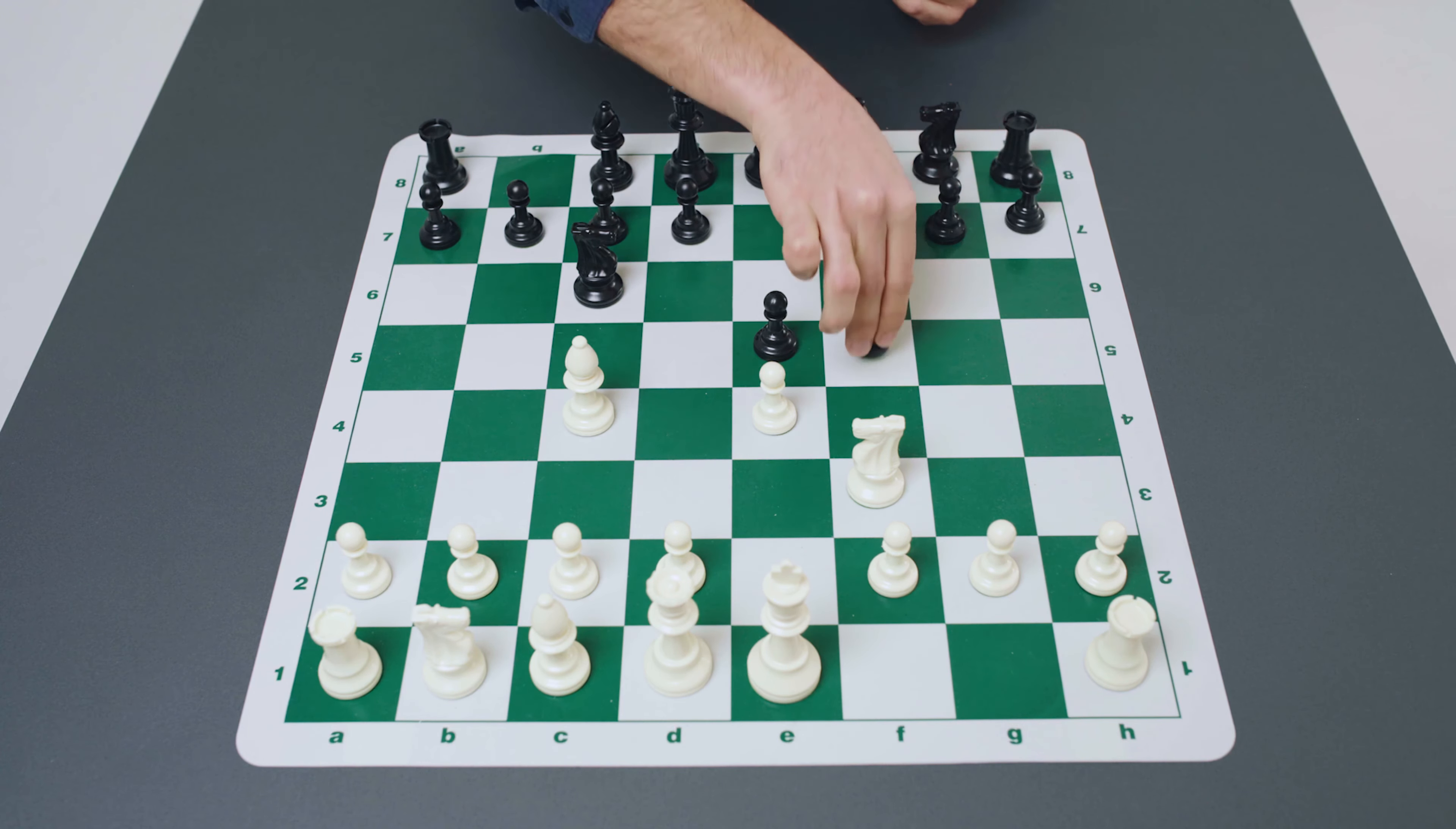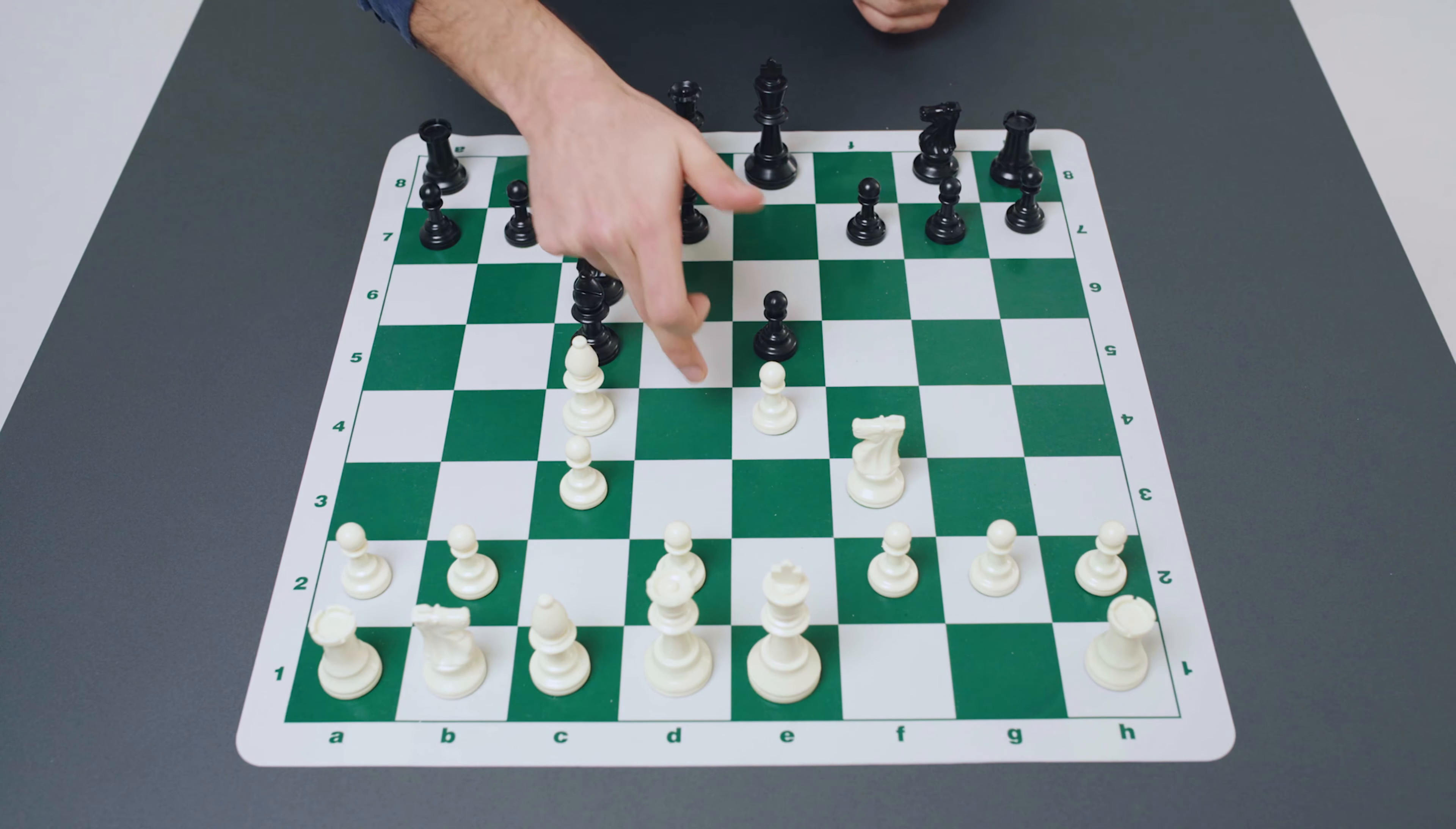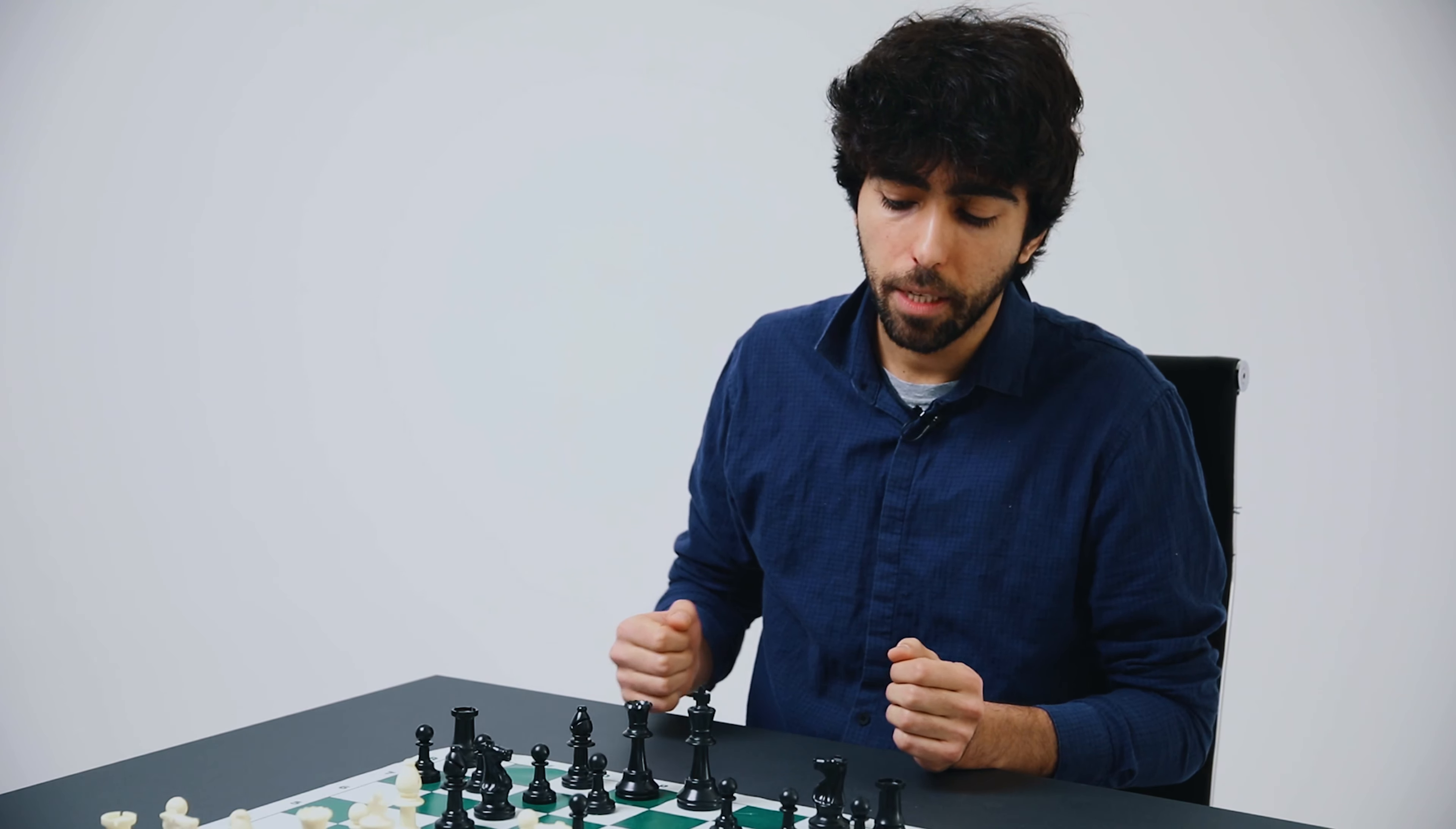Now besides bishop to c5 there is an equally popular option which is the move knight to f6. This move is known as the two knights defense and although it's equally popular, the types of positions that arise from it are very different in character.